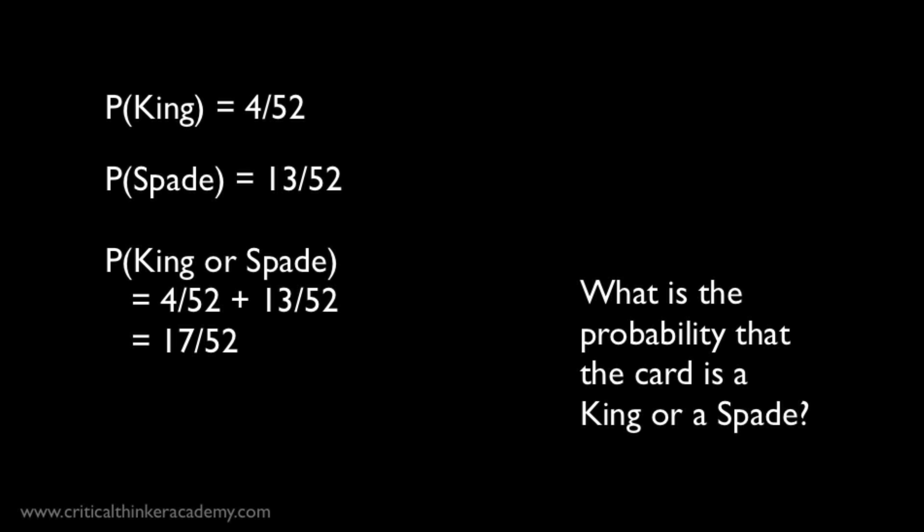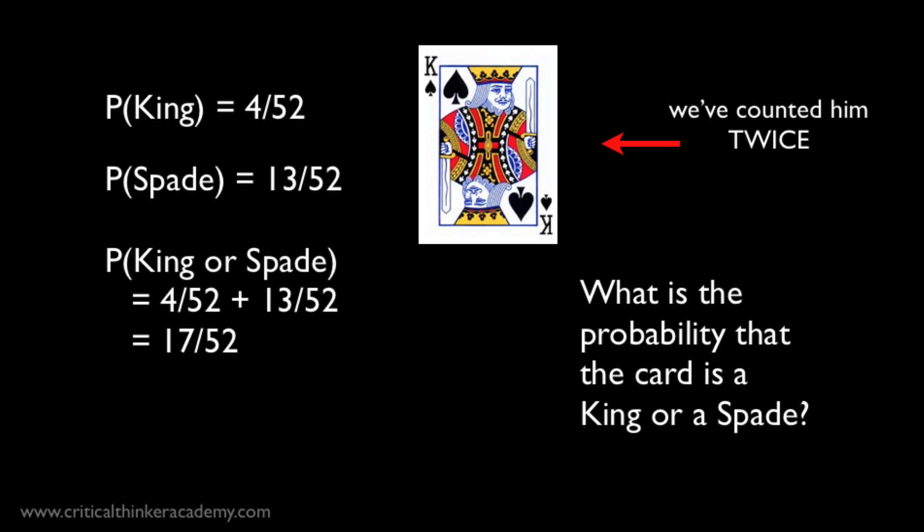But there's a problem with this answer. The problem is that in calculating the probabilities of drawing a king and a spade, we've double-counted one card. Namely, the king of spades. The king of spades is both a king and a spade. So this card is included in the calculation of both probabilities. He's included in the probability of drawing a king, and he's included in the probability of drawing a spade. But there's only one king of spades in the deck. So, by counting him twice, we're overestimating the probability of drawing either a king or a spade. And that's an error.